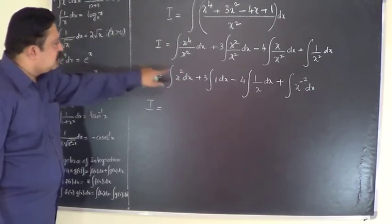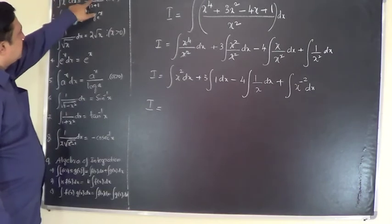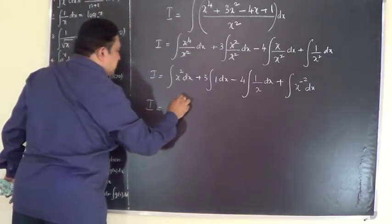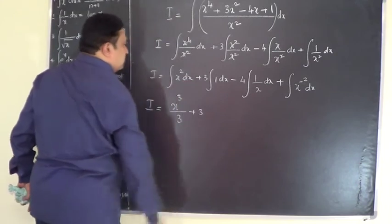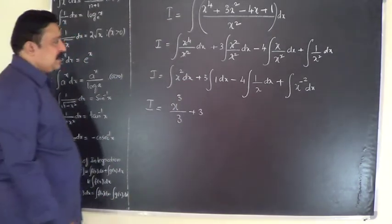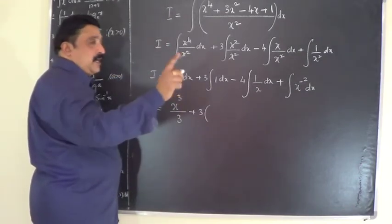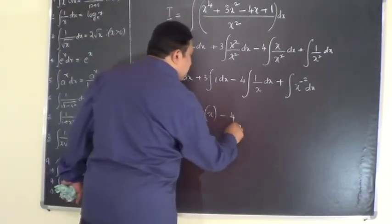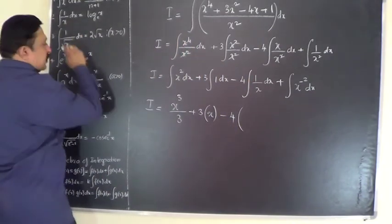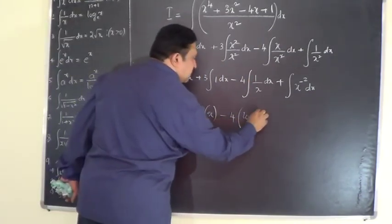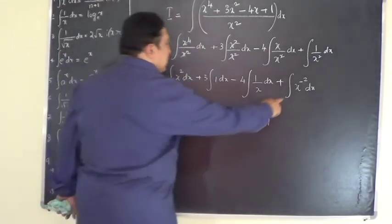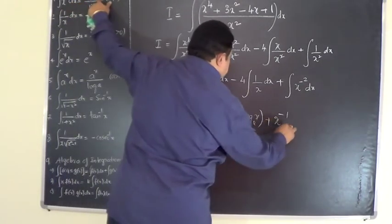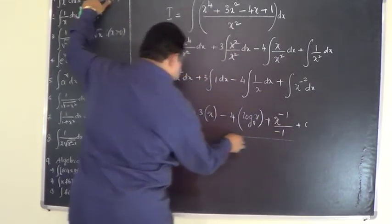Integral x squared dx — power is 2, so n is 2, giving x to the power of 3 by 3. Plus 3 times integral 1 dx — integration of 1 dx gives just x. Minus 4 times integral 1 by x dx — by direct formula this is logarithm of x. Plus integral x to the power of minus 2 dx — n is minus 2, so x to the power of minus 2 plus 1 is x to the power of minus 1, divided by minus 1.